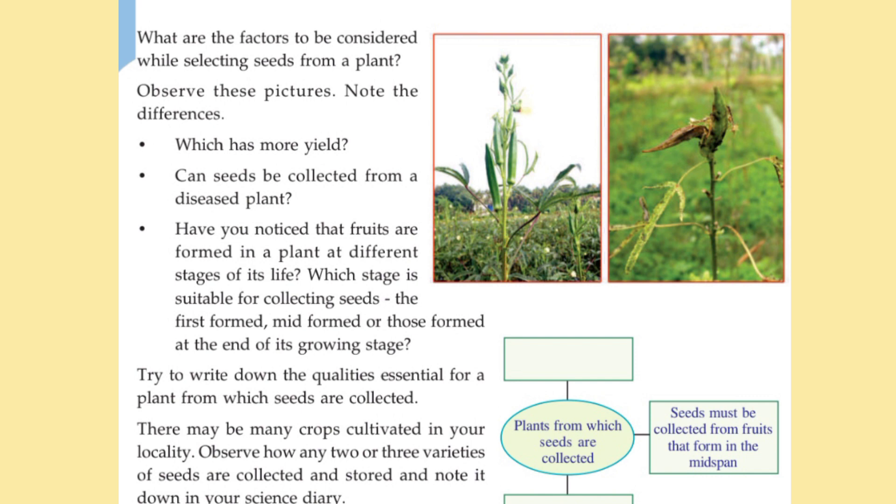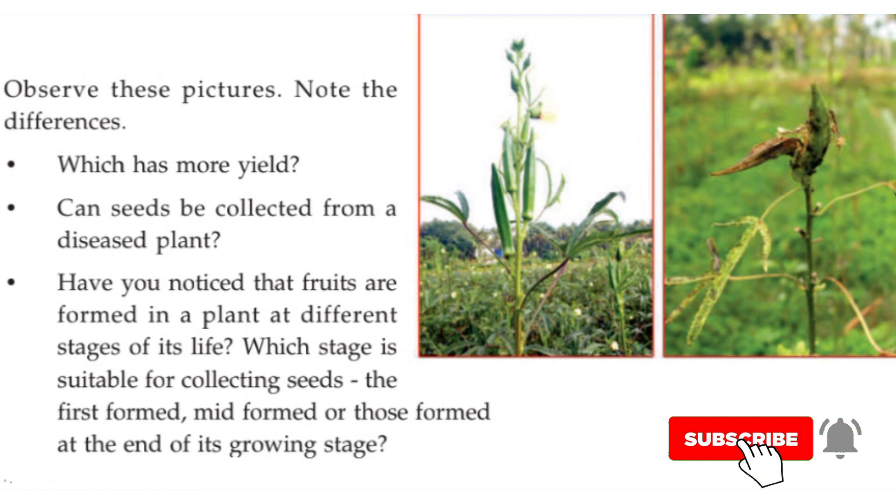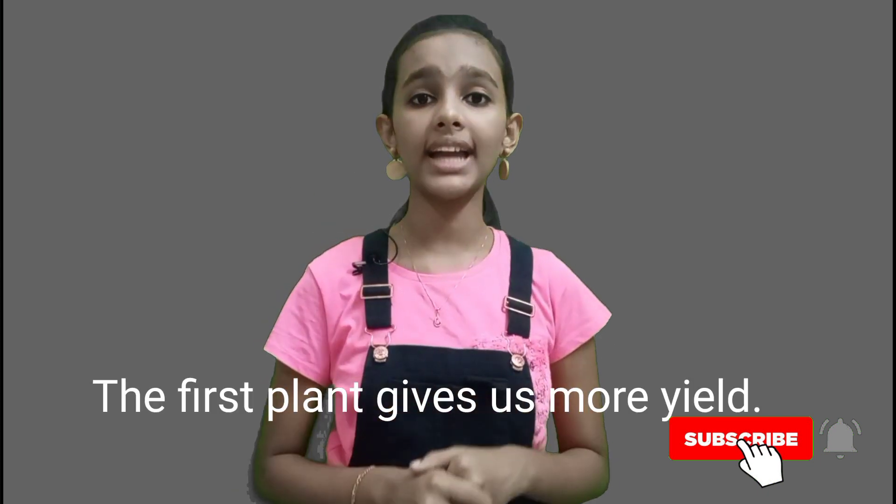We heard the story of Babu. He told that in his backyard, the pumpkin did not give much yield. So what may be the reason? Seed quality is a very important factor. What are the factors to be considered while selecting seeds from a plant? Look at these two pictures — can you identify what is different? The first picture looks healthier and has a lot of ladies' fingers. But the second one looks like a diseased plant with fungus on it. By looking at these two pictures, the first plant gives us more yield.